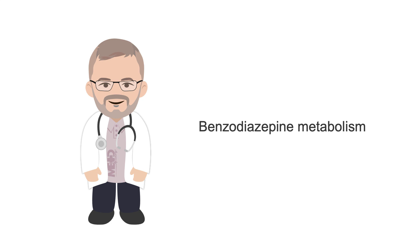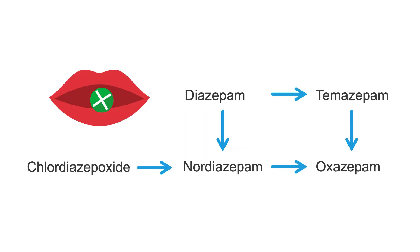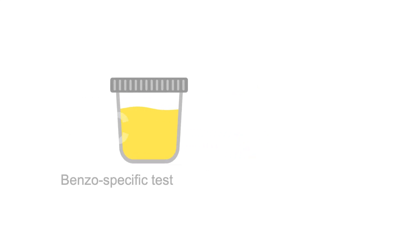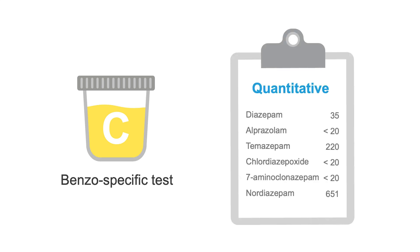Now, let's briefly review benzodiazepine metabolism. Similar to opioids, your typical benzo screen only detects a subset of common orally ingested benzos, shown here. Depending upon your lab, other benzos — including clonazepam, alprazolam, and lorazepam — might not be detected on a benzo screen except at very high doses, and may require you to order a benzo-specific confirmatory test, which will provide detailed quantitative data on various benzos and their metabolites. This will be extremely useful when you are prescribing one benzo but you're concerned the patient may be taking additional illicit benzos.